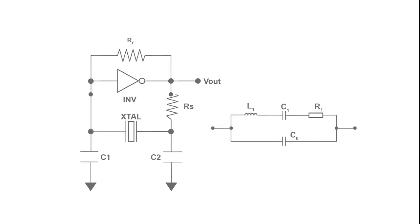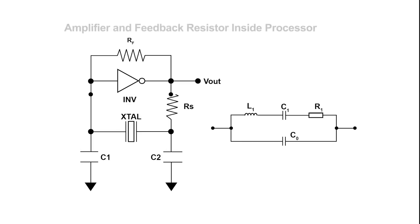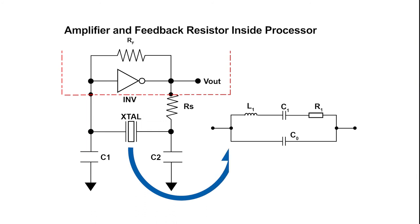In this next illustration, we see a Pierce oscillator circuit, commonly used in digital or processor designs. In this type of oscillator design, the filter consists of the crystal's equivalent model and the external load capacitors. The exact frequency at which an oscillator will operate is dependent on the loop phase angle shifts within the oscillator circuit.